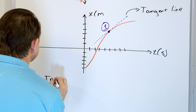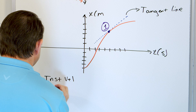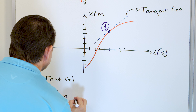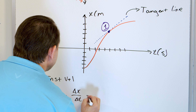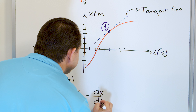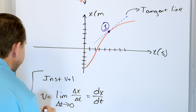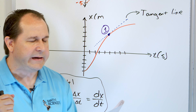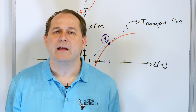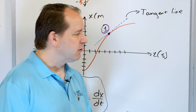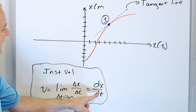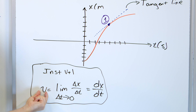The instantaneous velocity equals the limit as delta t approaches zero of delta x over delta t. In calculus, we rename this whole limiting process as just dx/dt. The bottom line is: the velocity is the derivative of the position function — the derivative with respect to time. If you know the position function and take its derivative with respect to time, you get a new function called the velocity.